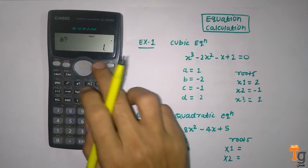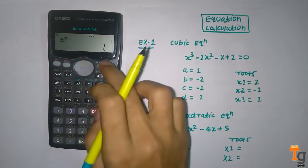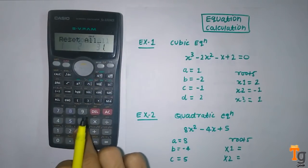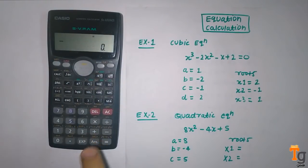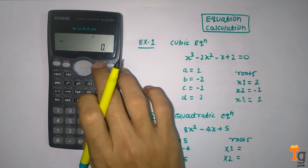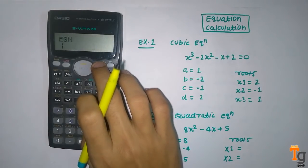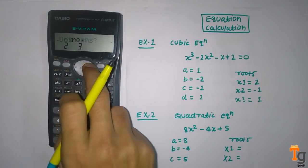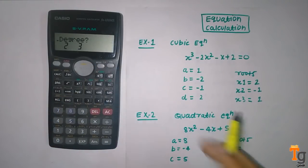So first we clear this by pressing this. Now calculator reset. We will again press equation 1, and then now our degree is 2, so we will again press 2 here.